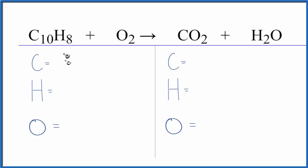So let's see what we can do. Let's count the atoms up on each side. 10 carbons, 8 hydrogens, and then 2 oxygen atoms. Product side, 1 carbon, 2 hydrogens, and then 2 oxygens, plus we have 1 oxygen here with the water. So we have 3.